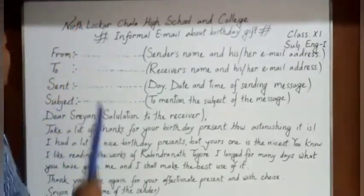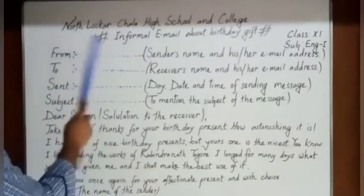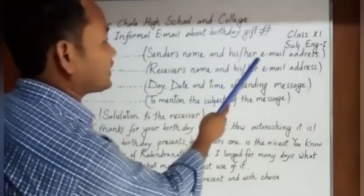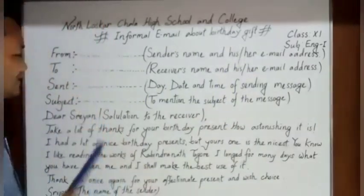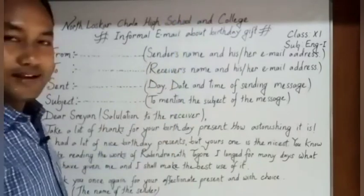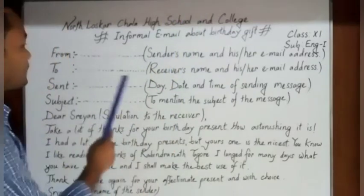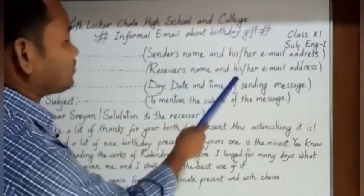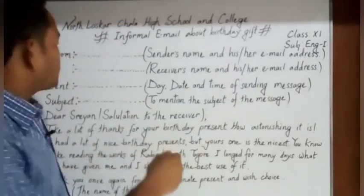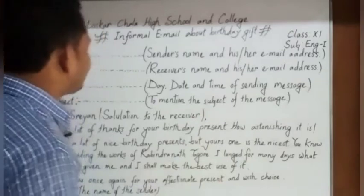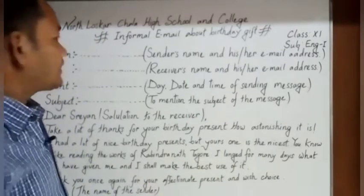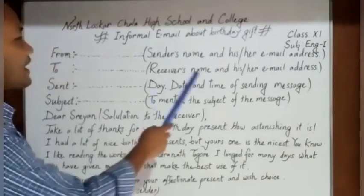You can see here: 'From' — the sender's name and his or her email address. The sender is who will send this message, with their name and email address. 'To' — the receiver's name and his or her email address. If you want to send an email, the person who will receive it — their name and address will be mentioned here.